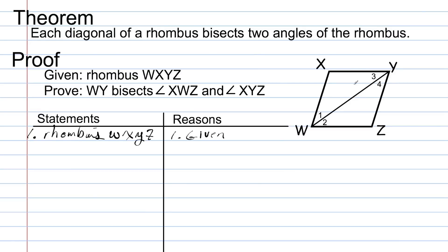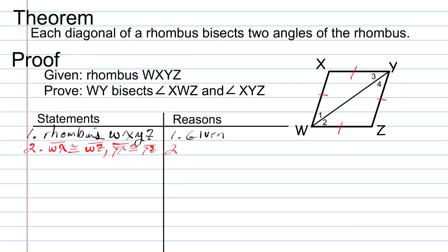To prove that the top triangle is congruent to the bottom triangle, I'm going to mark that W-X is congruent to W-Z, which is congruent to Z-Y, which is congruent to X-Y. I'll write it as: W-X is congruent to W-Z, and Y-X is congruent to Y-Z. The reason those are congruent is the definition of a rhombus.